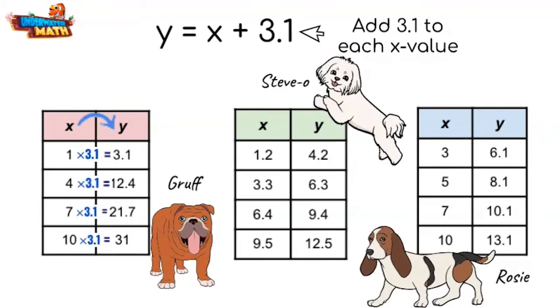Steve-o's table shows a number being added to each x-value. Can you see what number that is? You got it! It looks like 3 is added each time. This is not the correct table, but close.